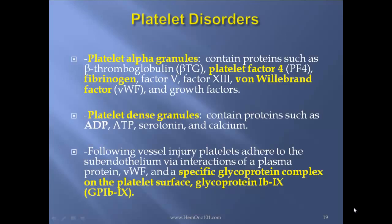Platelet disorders. Platelet alpha granules contain proteins such as beta-thromboglobulin, platelet factor 4, fibrinogen, factor V, factor XIII, von Willebrand factor, and growth factors. The platelet dense granules contain ADP, ATP, serotonin, and calcium.